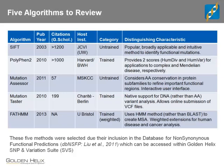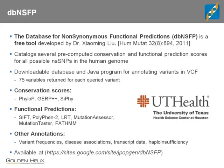DBNSFP does have a completely free version you can download and use — the website is at the bottom. It comes with a little Java program that you can feed a VCF file into, and it will give you back about 75 variables for each variant in your file. It includes actually six functional prediction scores. There's a log ratio test that we don't include with the version in SVS, and it's maybe not quite as advanced as the others.